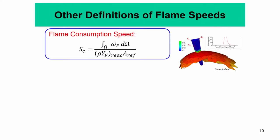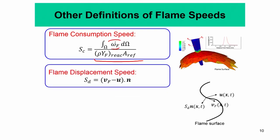Now, a few definitions of flame speeds. The laminar flame speed expression we obtained was valid for a planar laminar flame, but it gives a clear idea of how the flame behaves and what factors it depends on. For analysis in turbulent flows, we need different definitions. One is the flame consumption speed, given by integrating the fuel consumption rate over the entire volume, normalized by rho times Y_F of the reactants divided by a reference area. There is also the displacement flame speed, defined as the velocity of the flame surface with respect to the local flow field in the direction normal to the flame surface.